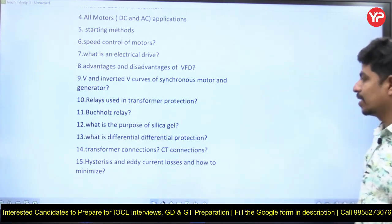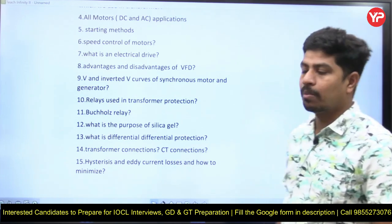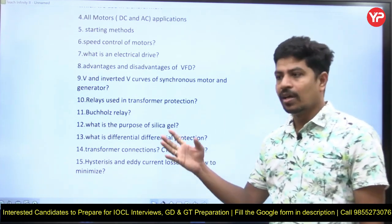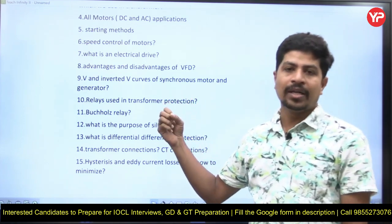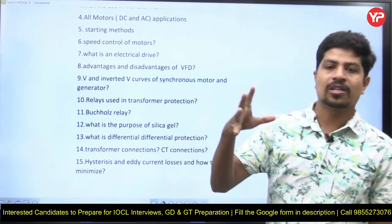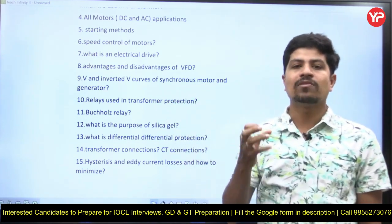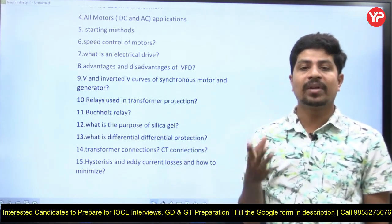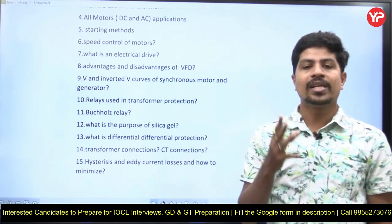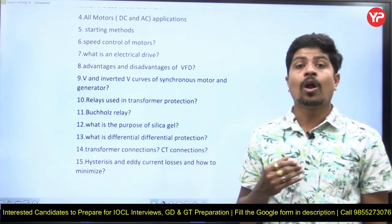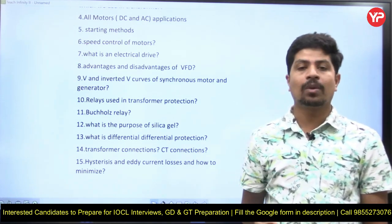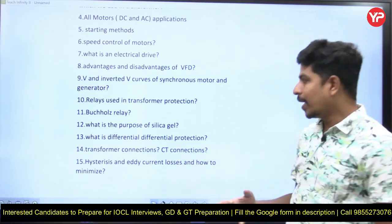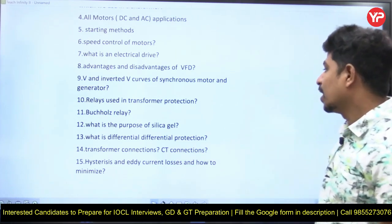The next question is about the purpose of silica gel in a transformer. Silica gel is used to catch moisture. Air entering from the atmosphere into the transformer carries moisture, which can deteriorate the quality of the material and oil inside the transformer. Silica gel absorbs this moisture from the incoming air to prevent degradation.